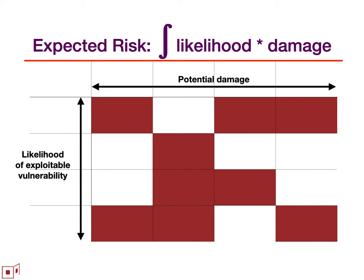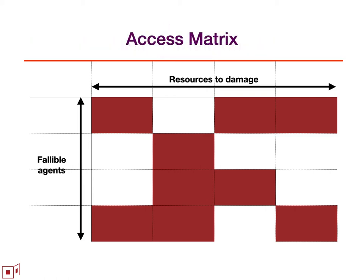Likelihood and value are difficult to measure, so we start off with proxy measures. The rows are the various fallible agents. The fallible agents might be malicious or might simply have a flaw that enables them to be subverted by an attacker. And the columns are the resources they have access to and therefore might damage if they misbehave. This is of course the classic access matrix.